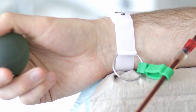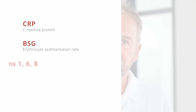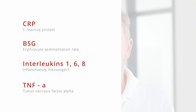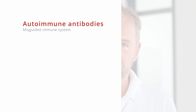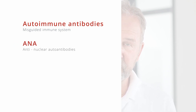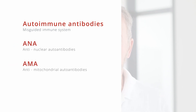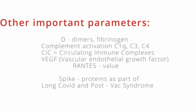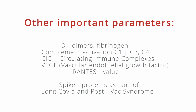Classic laboratory parameters that can be checked in advance are the CRP, the blood sedimentation rate, interleukin-1, 6 and 8, and the tumor necrosis factor alpha. Before immune absorption, one should check the autoimmune antibodies, including the ANA (anti-nuclear antibodies), possibly AMA (anti-mitochondrial autoantibodies), or the entire range of rheumatism antibodies or autoantibodies specific to the respective autoimmune disease, which every doctor knows.